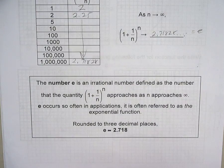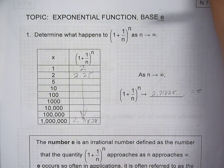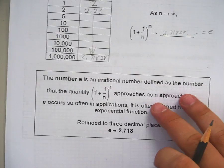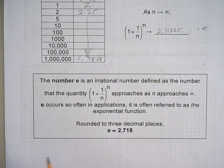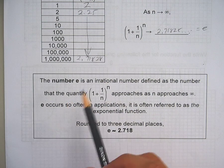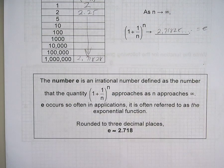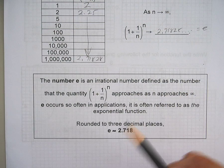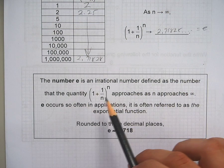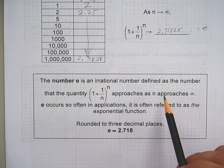E is this neat little number that once you hit calculus, it becomes really important and really cool and does a lot of interesting things. But for now, let's just get acquainted with it. The number E is an irrational number, like pi, there's no fraction that can show it, defined as the number as n goes to infinity.